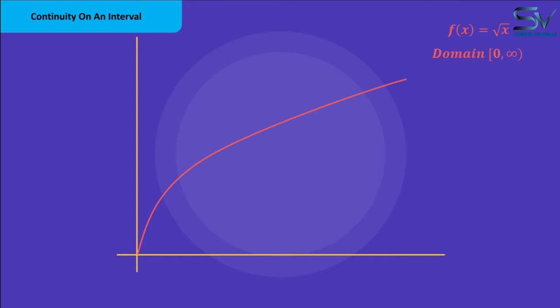Following that, we check for continuity at any point along the curve. Let's take a look at x equals 16. And its limit is 4. The function's value at this point is 4. Indicating that it is continuous at x equals 16.